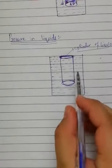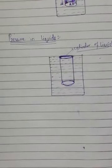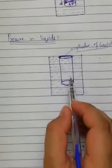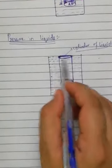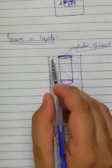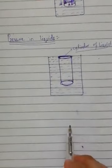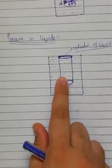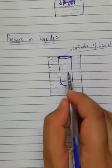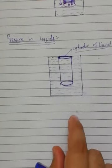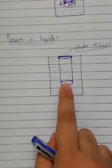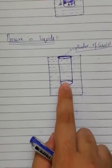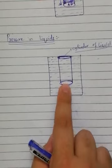Suppose we have a container, and this container is filled with water. You can put any kind of liquid in it, but I take water and fill this container. Now we imagine a cylinder of liquid. What is meant by cylinder of liquid? It means we actually select any part of the liquid present inside the container, and the shape of this selected part is just like a cylinder.